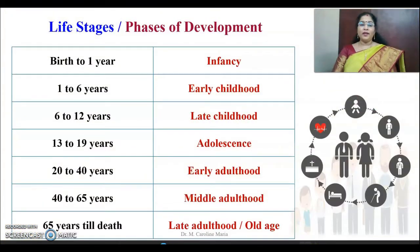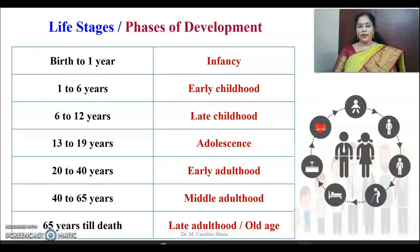Let's now focus on the different life stages, otherwise called as phases of development. From birth to one year is called infancy; one to six years is early childhood; six to twelve years is late childhood; thirteen to nineteen, all teen ages, is called adolescence; twenty to forty years is early adulthood; forty to sixty-five years is middle adulthood; and sixty-five years till death is called late adulthood or old age.